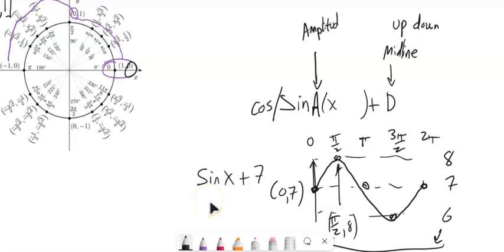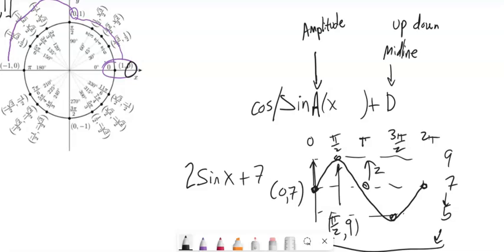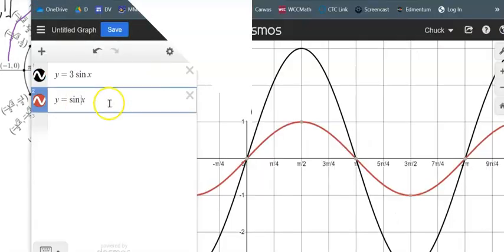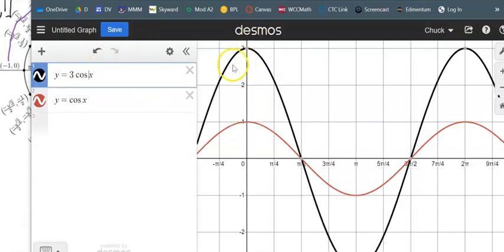If this were a sound wave, that amplitude would be volume. So even for sine x plus 7 multiplied by 2, that just changes the distance to 2 — instead of going from 7 to 8, it goes from 7 to 9 and down to 5. And it works for cosine as well — switching both to cosine, it stretches by a factor of 3. So I have things that affect the output: how far it goes from the midline, and where the midline is.